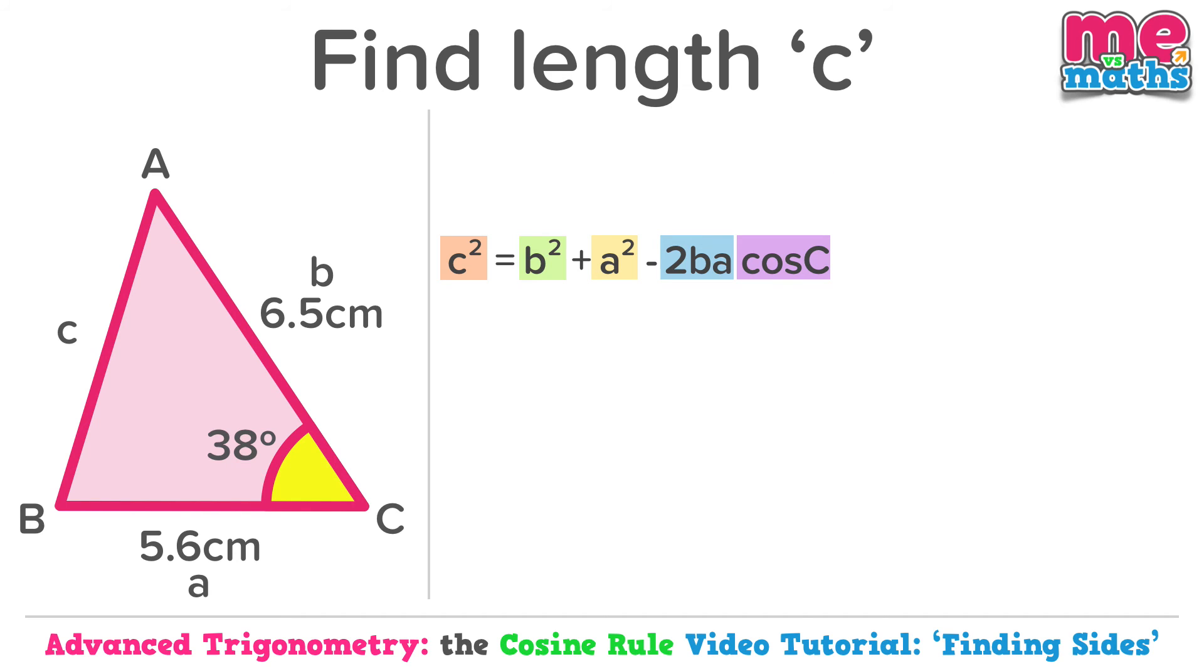So c squared equals 6.5 squared plus 5.6 squared. The b, 6.5. The a, 5.6.